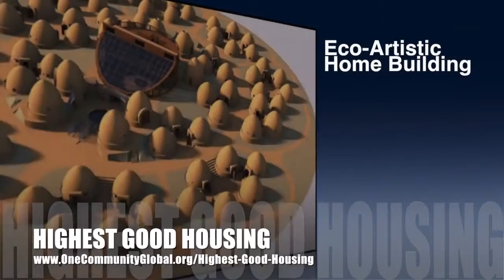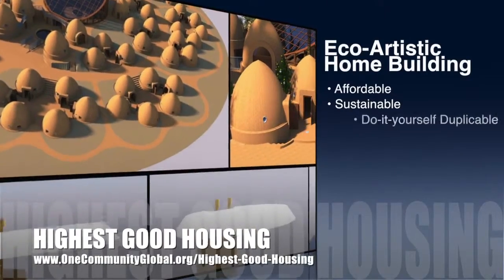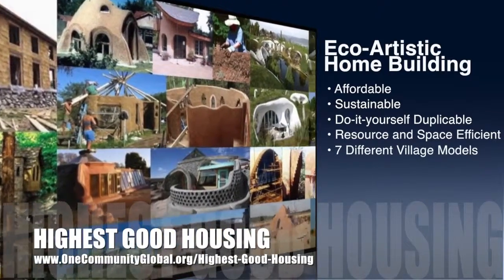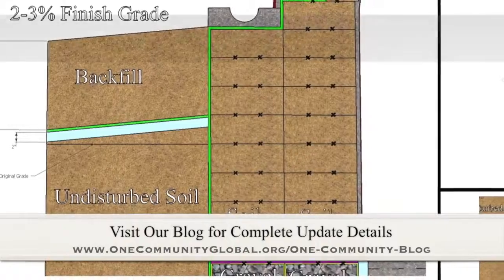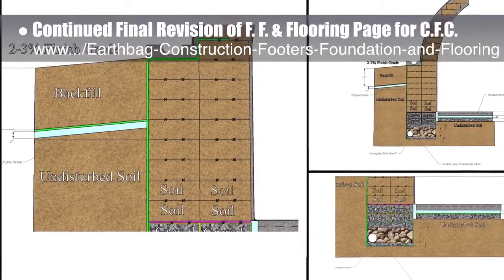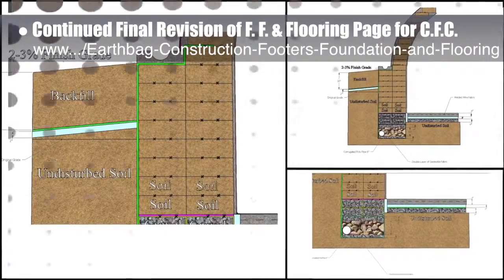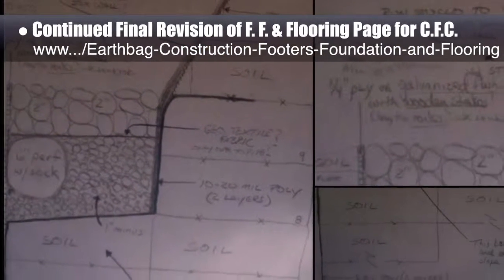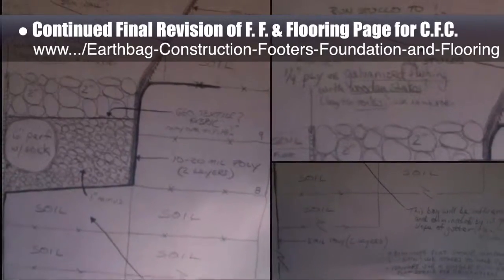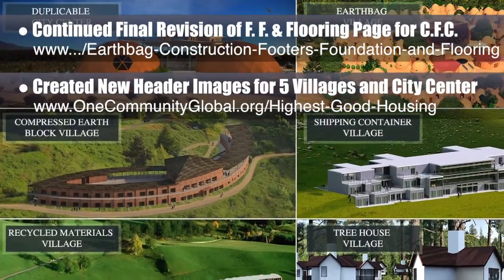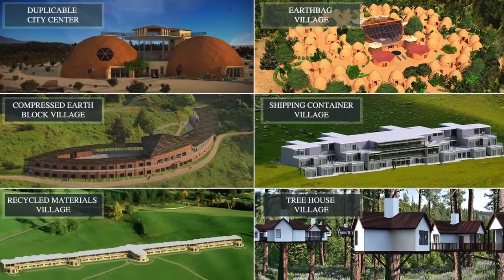The One Community approach to highest good housing is eco-artistic home building that is affordable, sustainable, do-it-yourself, duplicable, resource and space efficient, and consists of seven different sustainably constructed village models. This last week the core team continued what we hope will be the final revision of the footers, foundations and flooring page for the upcoming crowdfunding campaign, including floor construction narrative additions, design updates, a new compass-based design, and an all new below-ground water collection design that eliminates concrete. We'd say we're now 36 percent complete with this revision. We also created new header images for four of the five villages and the city center.